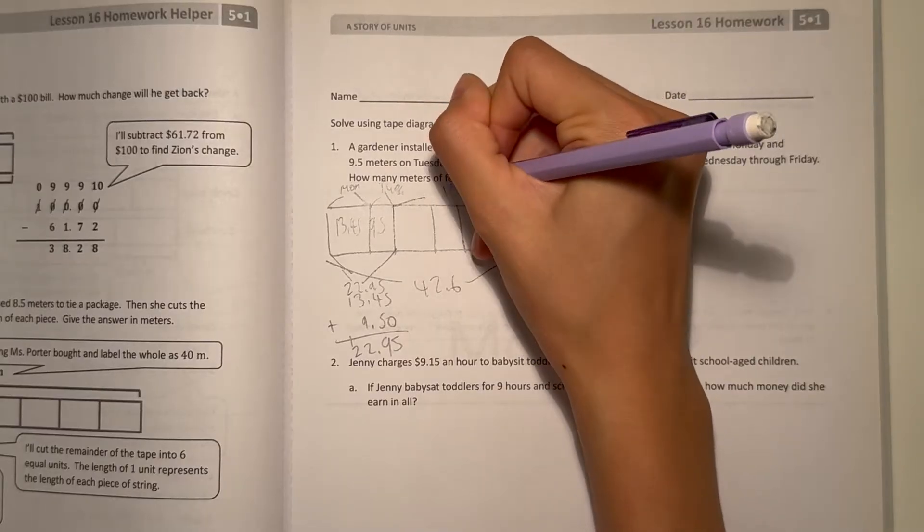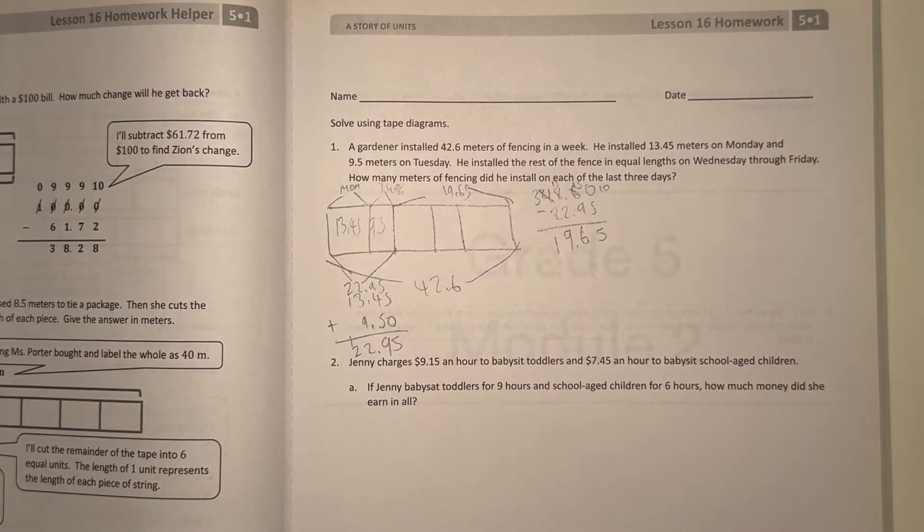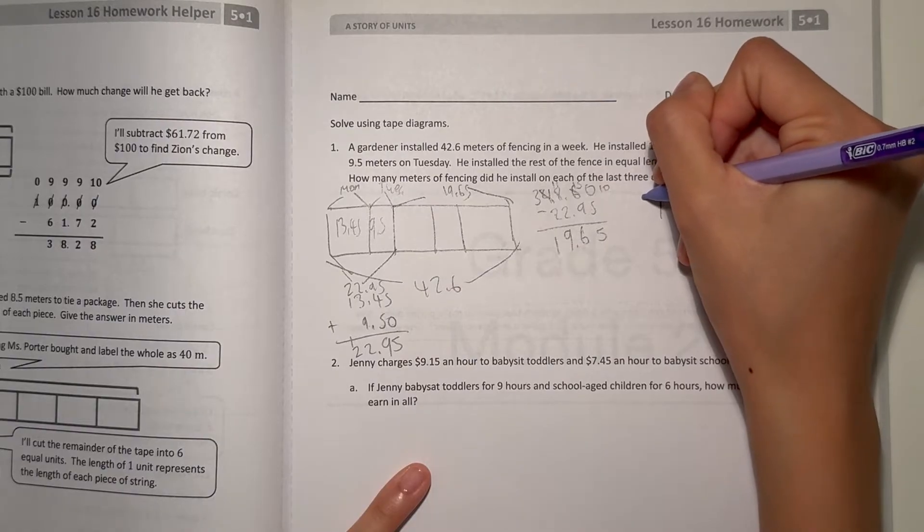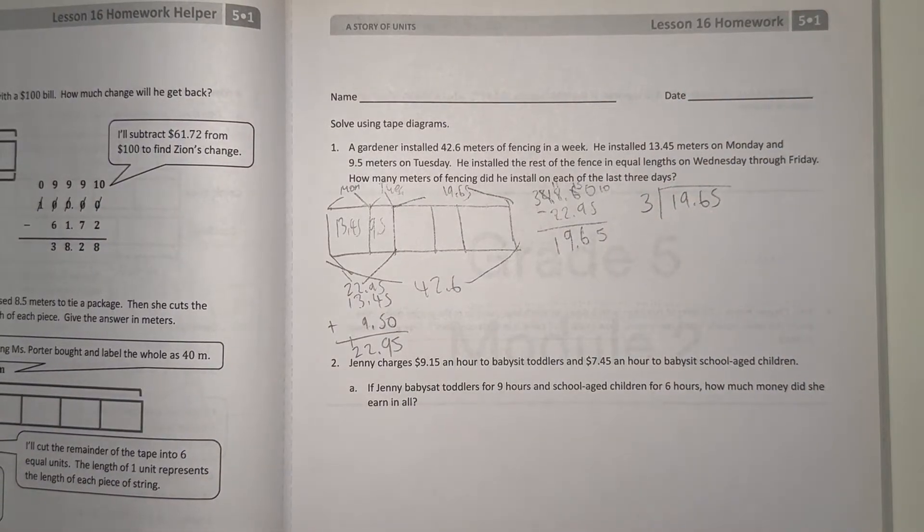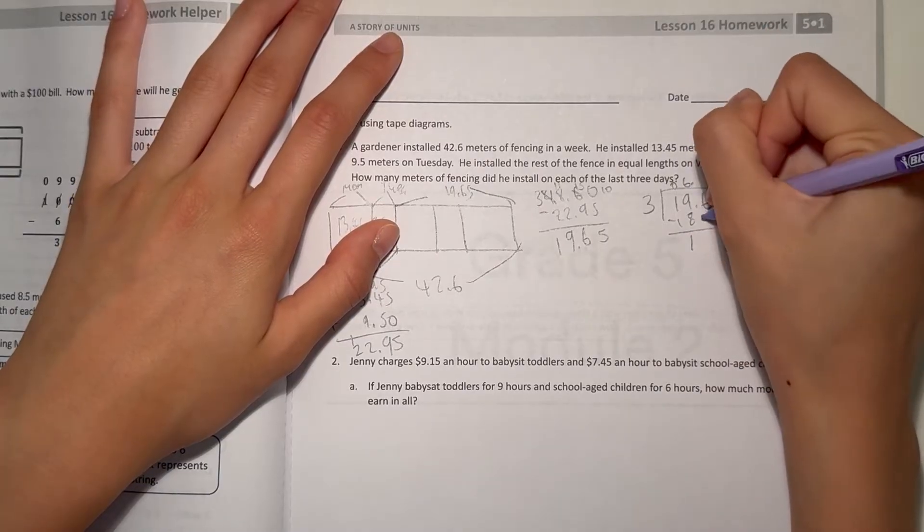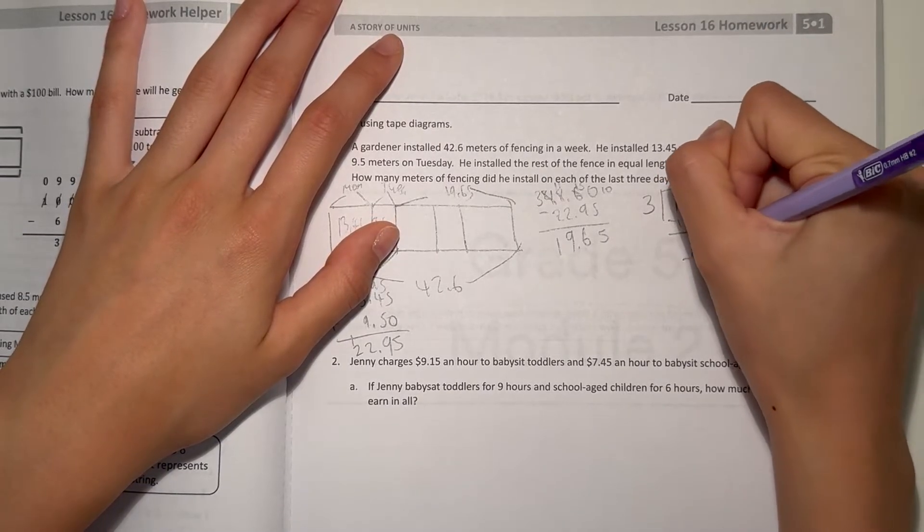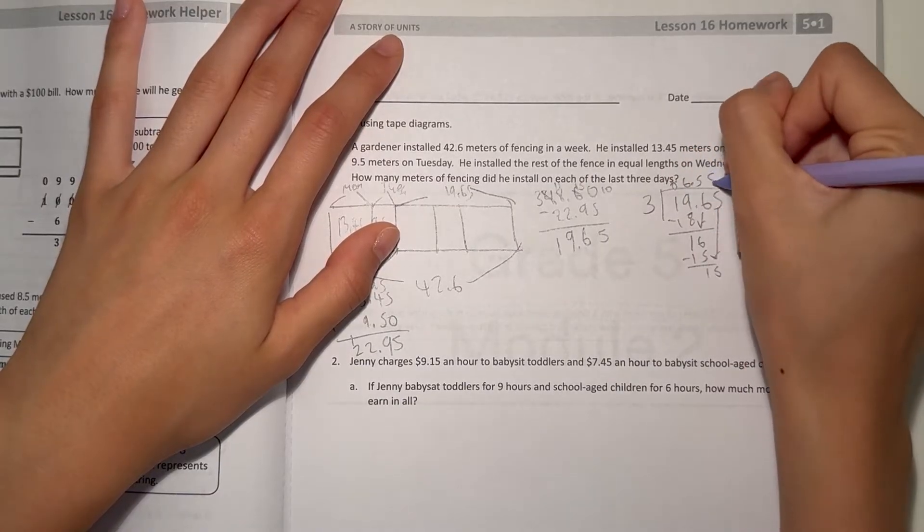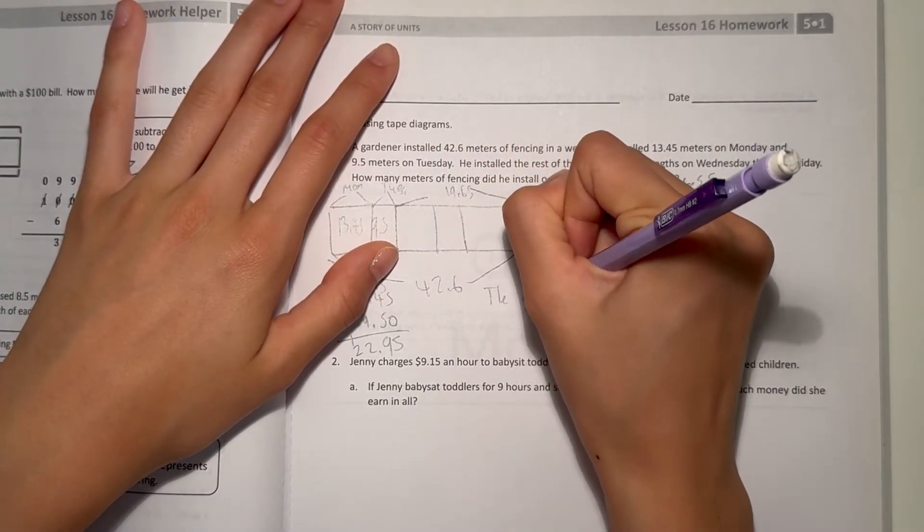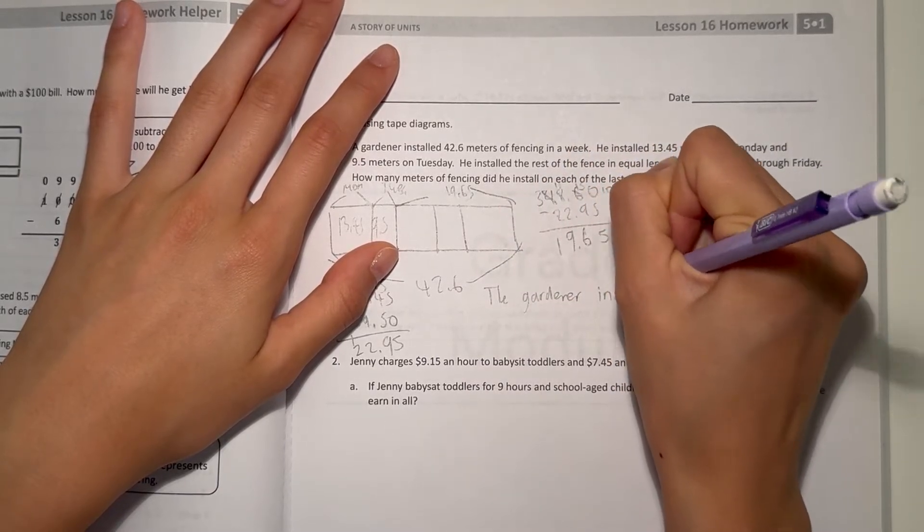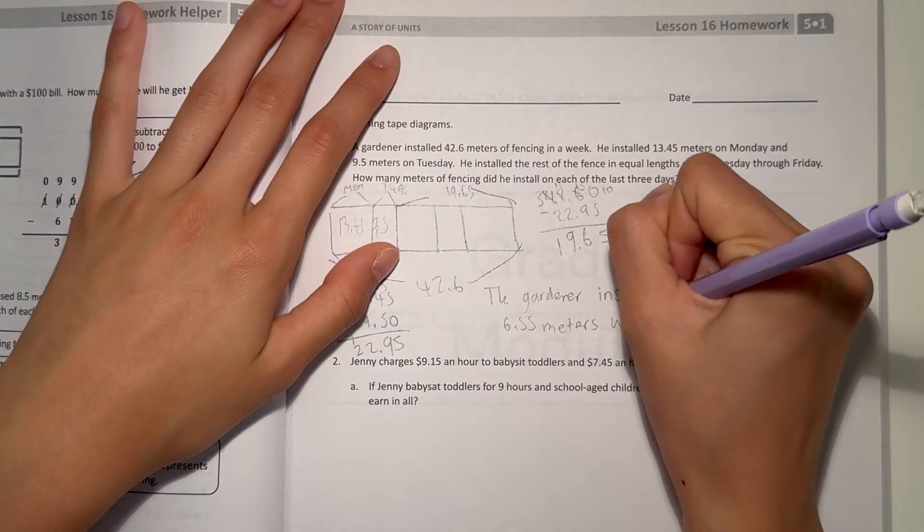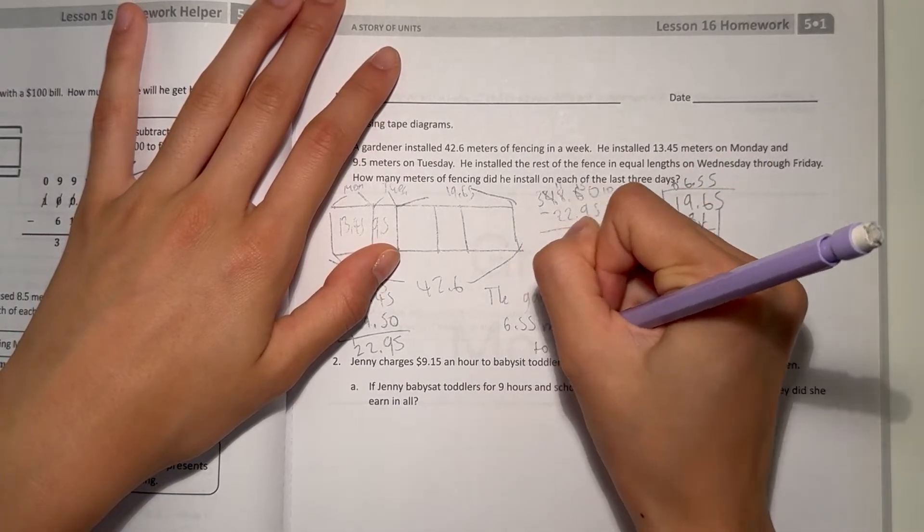So that means Wednesday through Friday he installed 19.65 meters, but we have to find out how many he installed on each day. So 19.65 divided by 3 because it's Wednesday, Thursday, and Friday. 3 goes 6 times into 19 minus 18, that's 1, carry the 6 down, 3 goes 5 times into 16, that leaves 1, carry the 5 down, and 5 times into 15. So 6.55. That means the gardener installed 6.55 meters Wednesday to Friday.